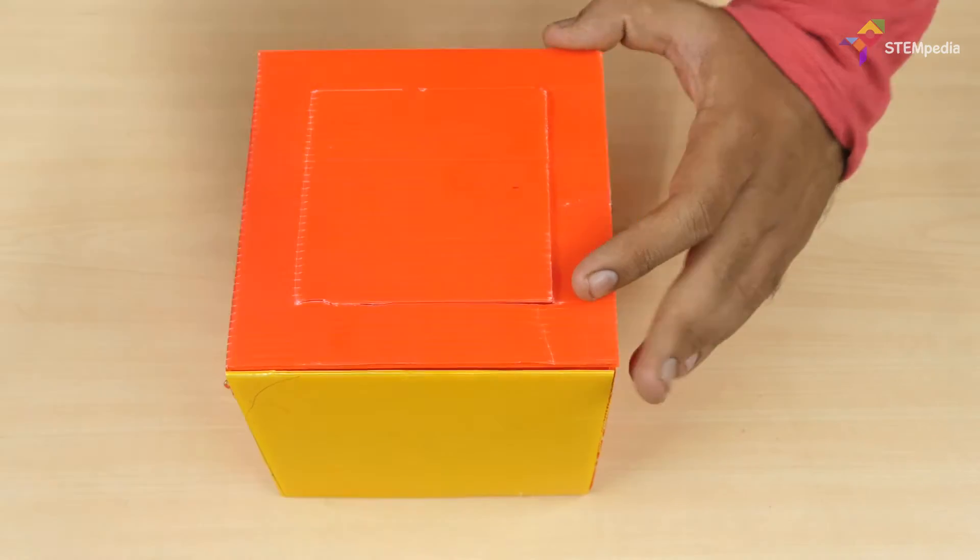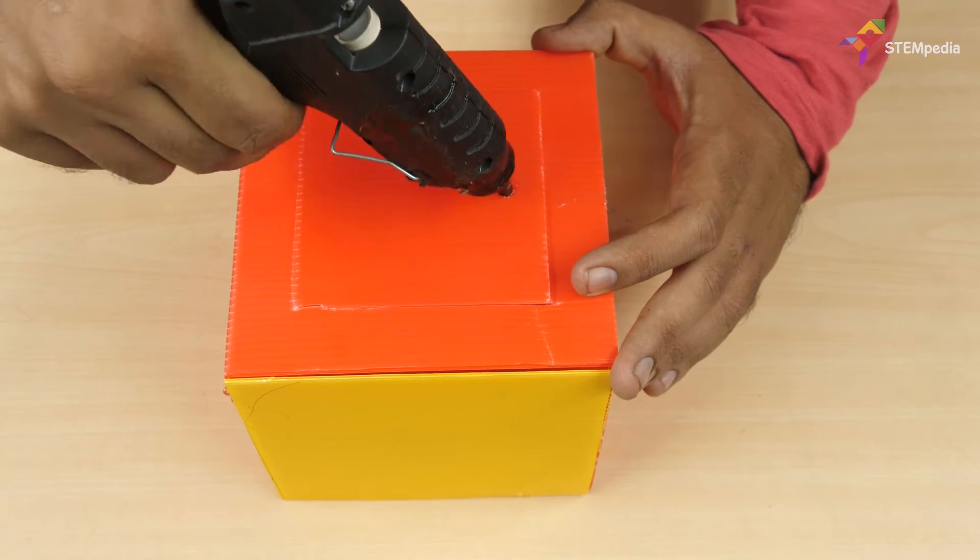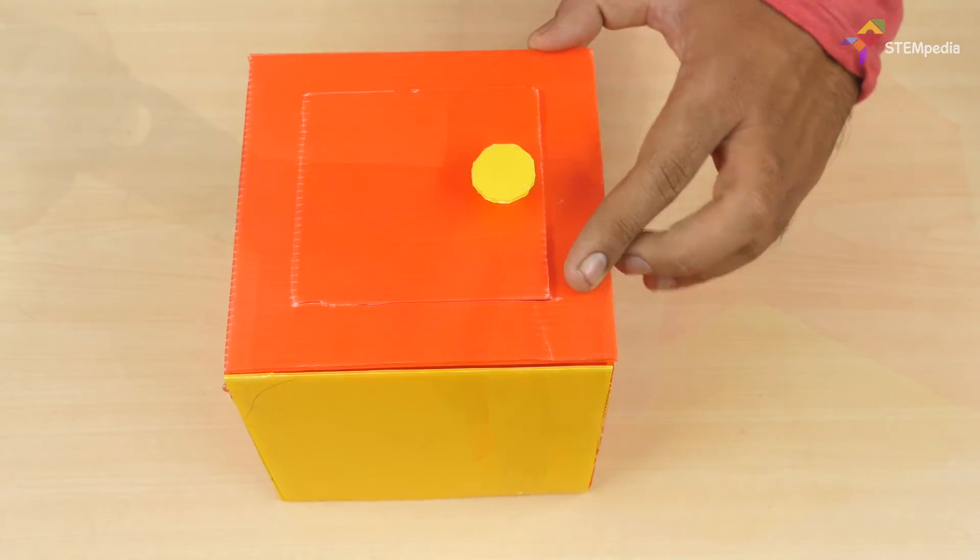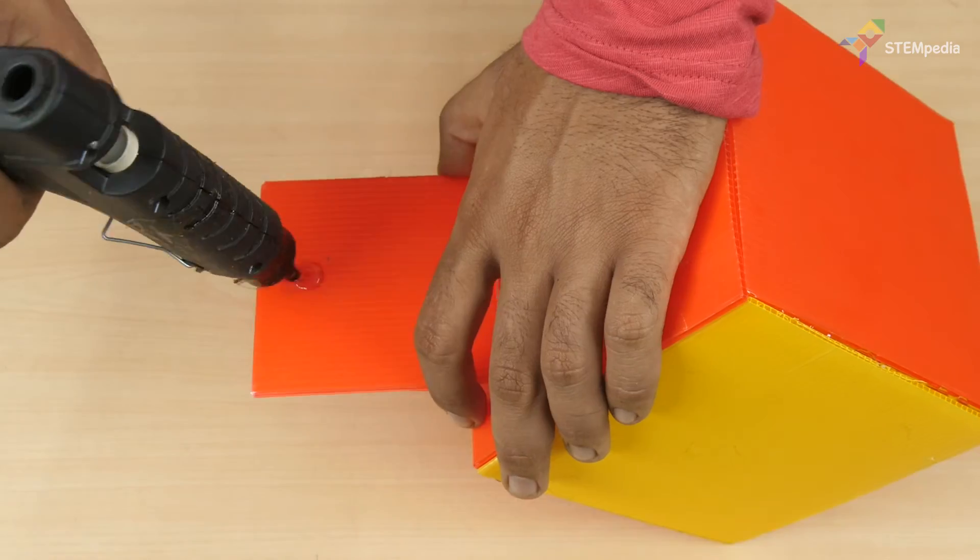Then attach the handle to the outer side of the door and the U-shaped structure to the inner side.